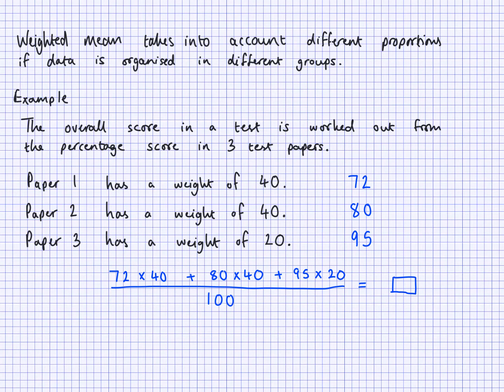Be prepared to work backwards as well. For example, if the weighted mean or the weighted overall score is given to you, are you able to find this number 95 here? You would have to rearrange this equation. Times by 100, then subtract these bits here, and then divide by the 20. That will get the 95 out for you.